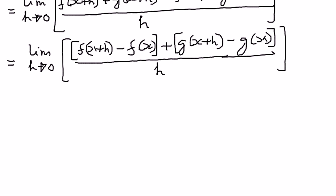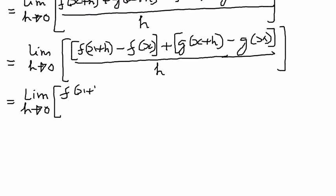Therefore, if we apply the limits to each one of them, we can write this as follows: limit as h approaches zero of f of x plus h minus f of x, this whole thing divided by h.